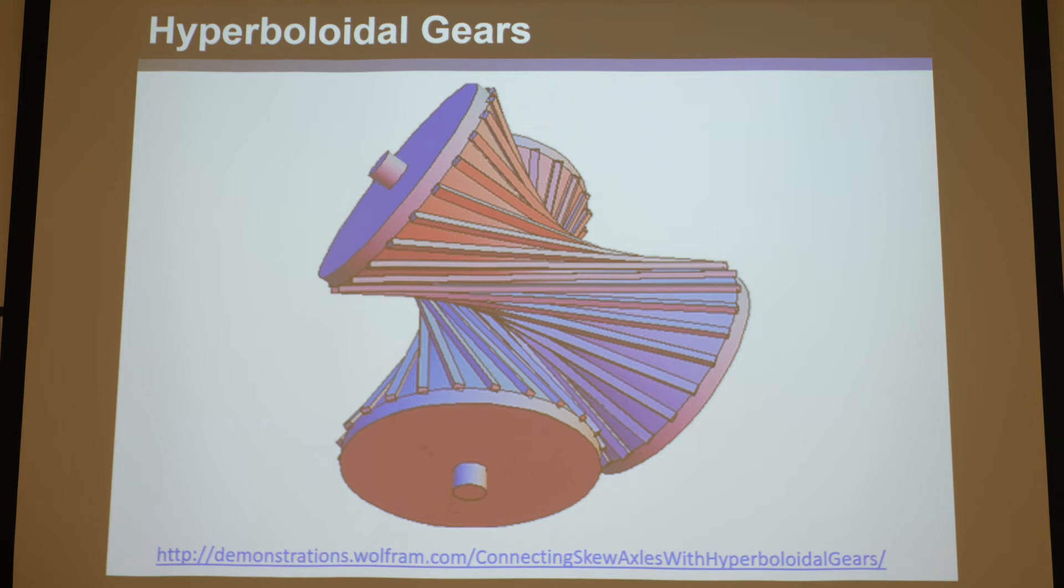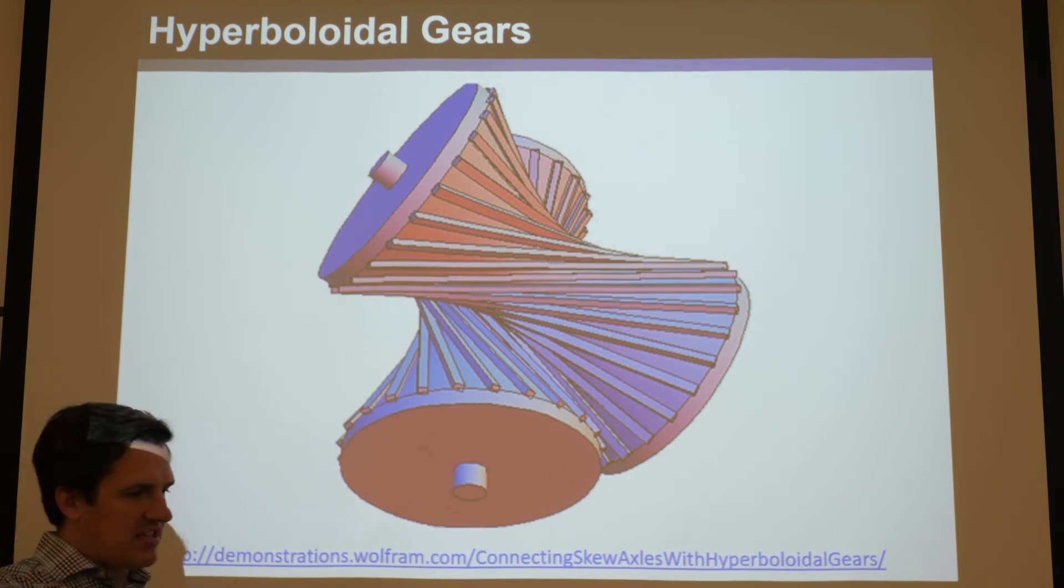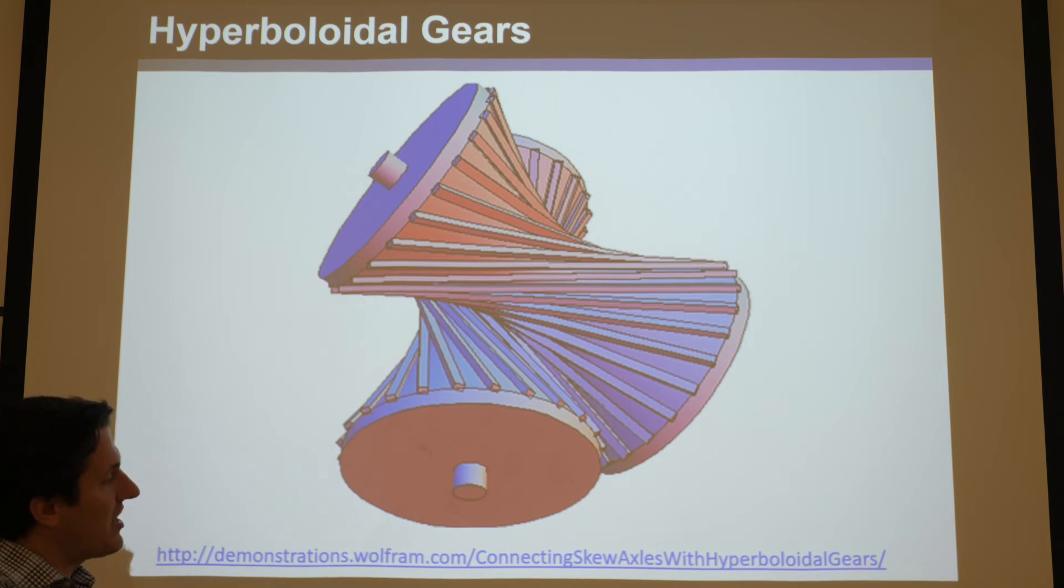Then you've got skew axes that are 90 degree skew, meaning the lines of their axes don't intersect or are parallel, but they're also 90 degrees apart. We can do helical gears or worm gears for those. But now say you want it to be skew but not necessarily 90 degrees - you want a different angle between the skew lines.